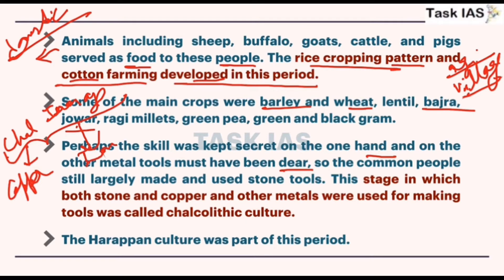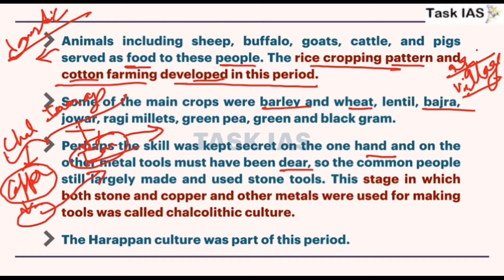Iron allowed more inclusive development, while copper gave more scope to inequality in society. From the Copper Age, people learned about metallurgy and different practices, and they used that expertise in the later Iron Age. That is why from the Iron Age more development in economy and social dimensions was noticed — for example, second urbanization was observed in the Ganga river valley during the Iron Age.